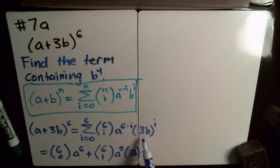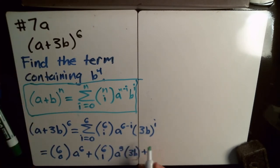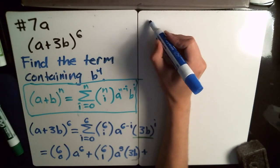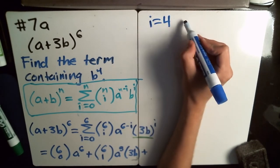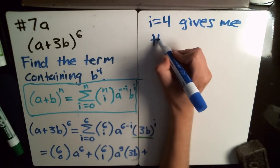If you notice here, the term that I need, we need to have a b to the 4th in it. Well, in my equation here, the b is here, and the power on it is i. So if I want b to be raised to the 4th power, I just need i to be 4, and so that will be the term that I'm wanting to find. In other words, i equals 4 gives me the right term.